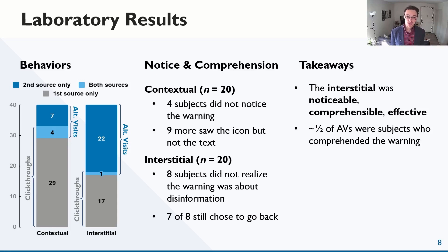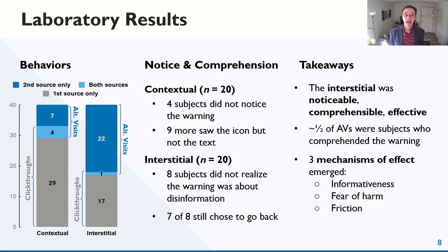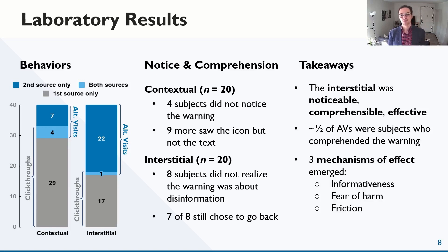Through interviews, we identified three mechanisms of effect. The first was informativeness — subjects who understood the warning and chose to look for a more legitimate source. The second was fear of harm — users found the warning threatening and thought they or their computer was at risk of harm. And finally, friction — some users found it easier to go back and pick a different result, hopefully with no warning, instead of reading the warning and deciding whether to listen to it.